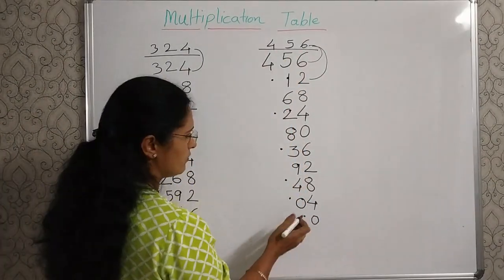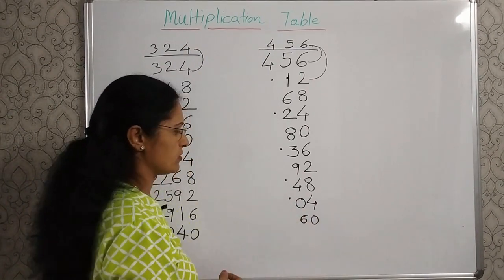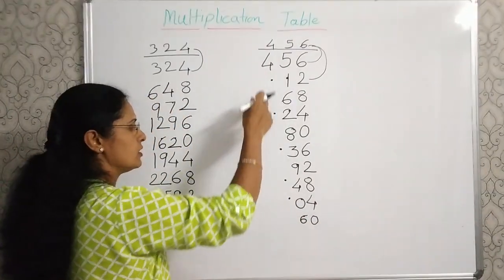0 plus 5, 5, and this dot, 6. Now see the hundreds place.